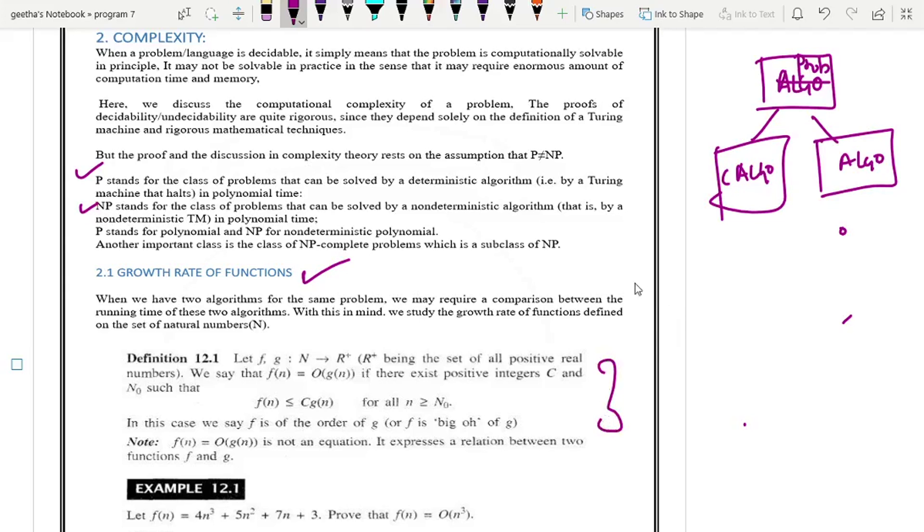Now you have a function called f of n and that can be represented as order of g of n. This is one of the way to represent a complexity of a problem. Now what is f of n and when we can say that f of n, any function can be represented as order of g of n.